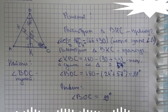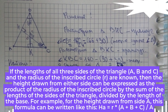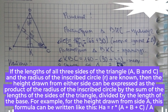Step 3. If the lengths of all three sides of the triangle, a, b, and c, and the radius of the inscribed circle, r, are known, then the height drawn from either side can be expressed as the product of the radius of the inscribed circle by the sum of the lengths of the sides of the triangle, divided by the length of the base. For example, for the height drawn from side a, this formula can be written as: ha = r * (a + b + c) / a.